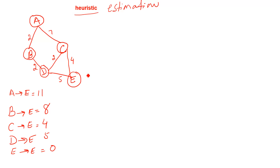Here is the model. My goal is to start my journey from point A and reach point E. That is my ending point, and you can see we have different routes here. These are the actual costs — from A to B the actual cost is 2, from A to C the actual cost is 7, and so on. But since we are using the heuristic approach, we are not going to use the actual cost. We will use the estimation cost.